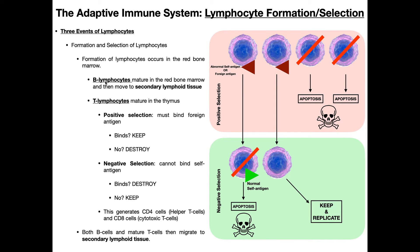Regardless of whether you have a B or a T cell, both must first undergo positive selection. To pass this test, these cells have to be able to bind to foreign antigen. Think about the function of an immune cell — these cells are designed to bind to foreign antigen. If they cannot bind to a foreign antigen, they're useless and wouldn't be able to perform their job. The ones that don't pass — cells three and four — are destroyed; they're caused to commit apoptosis. Cells one and two, which did bind foreign antigen, do their job but still have to pass one more test.